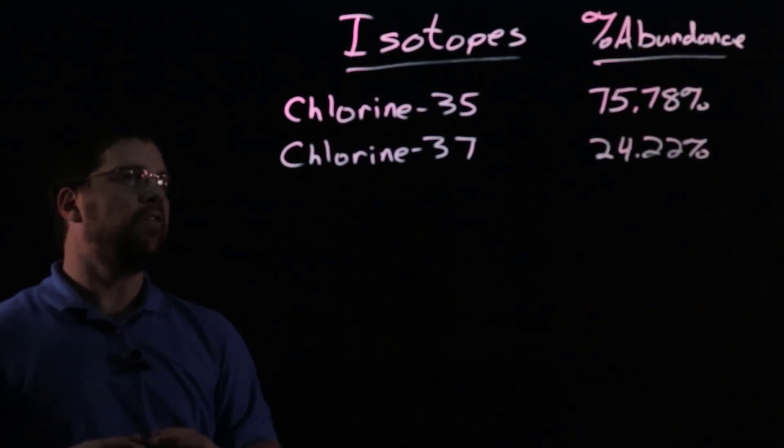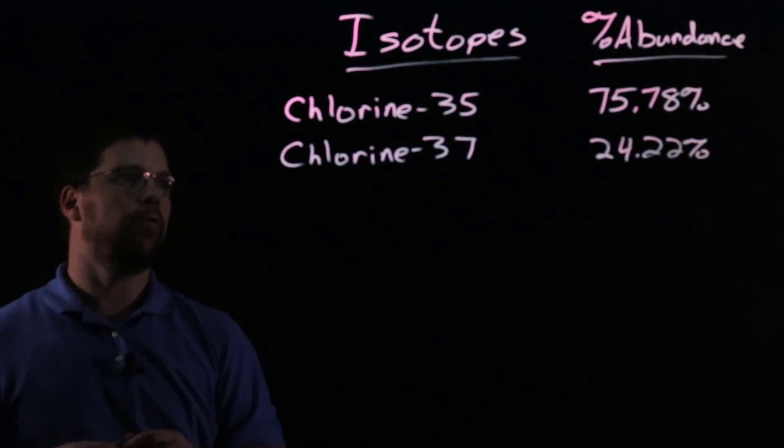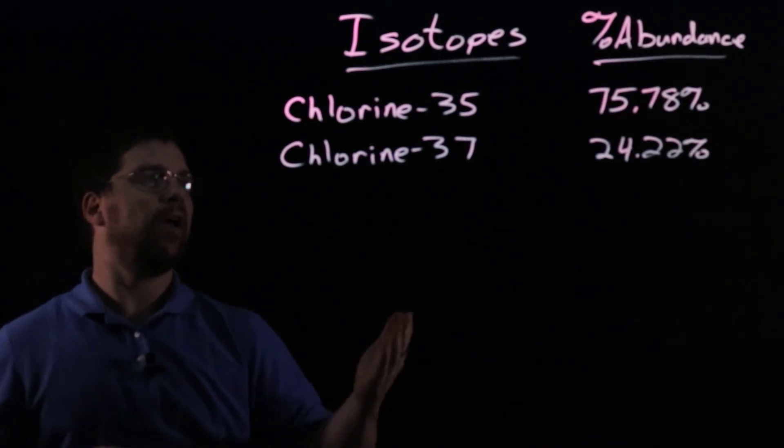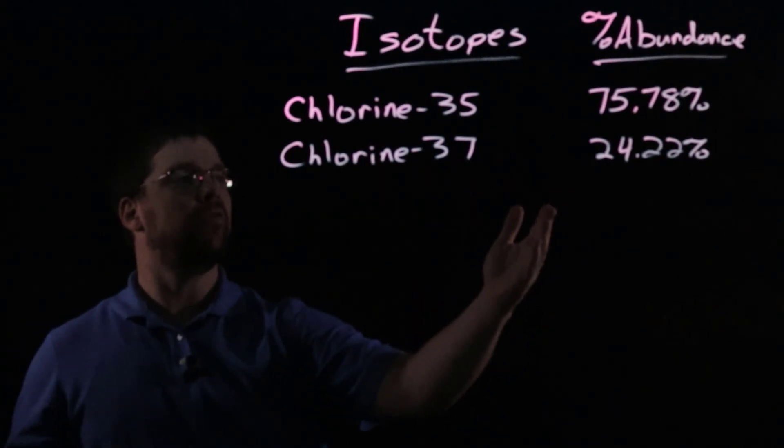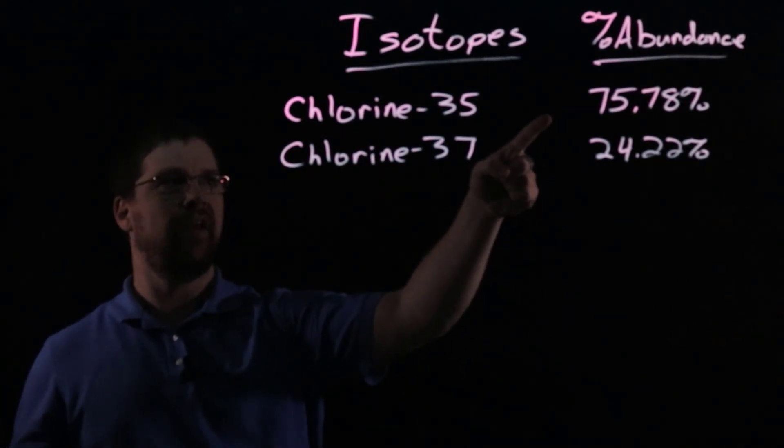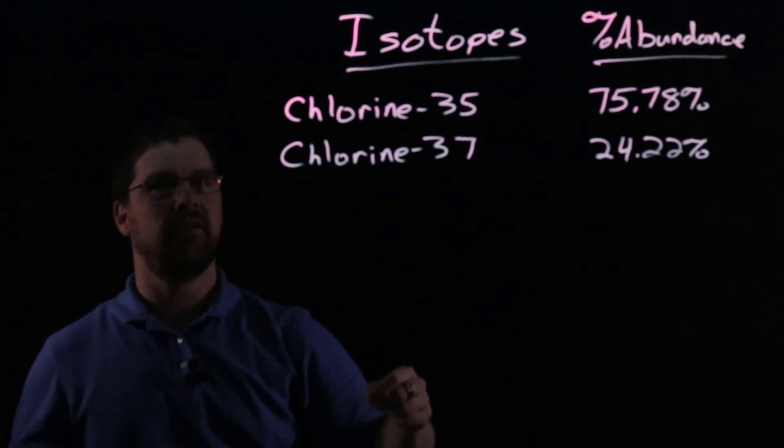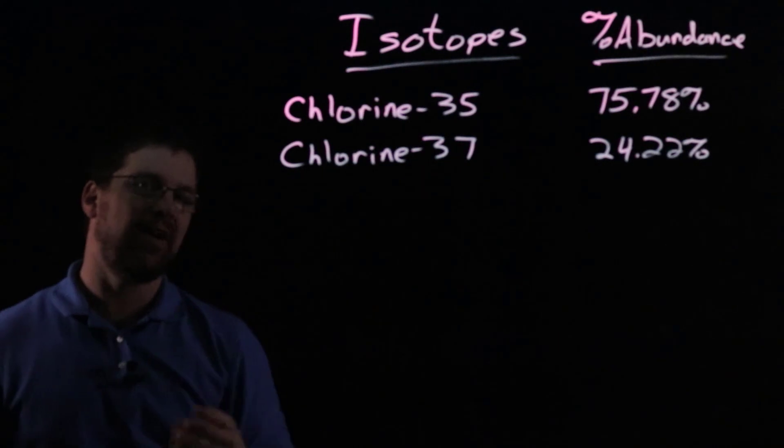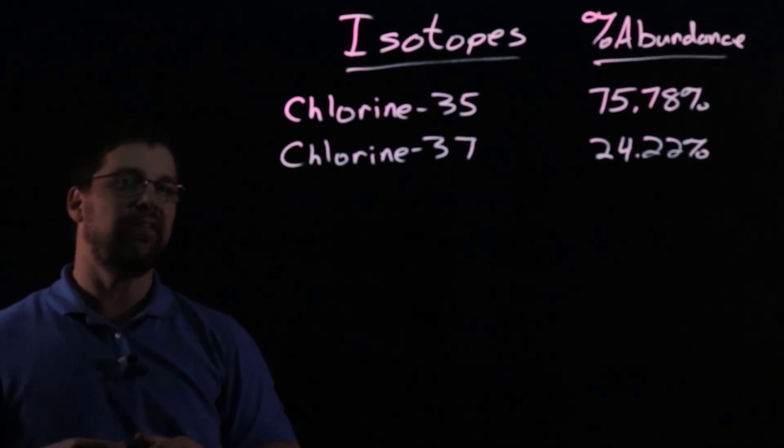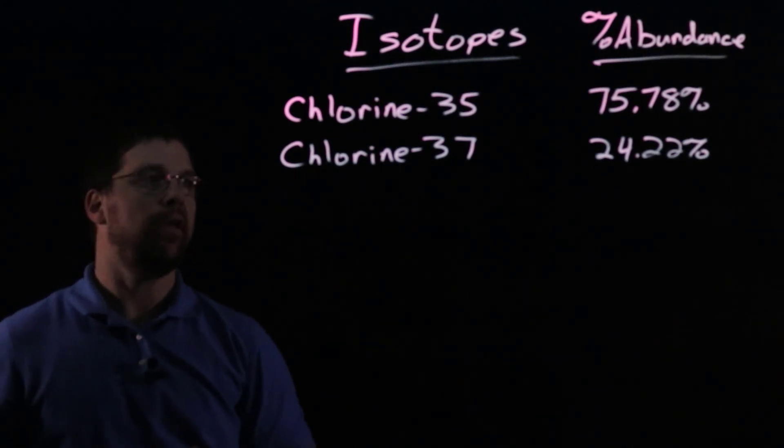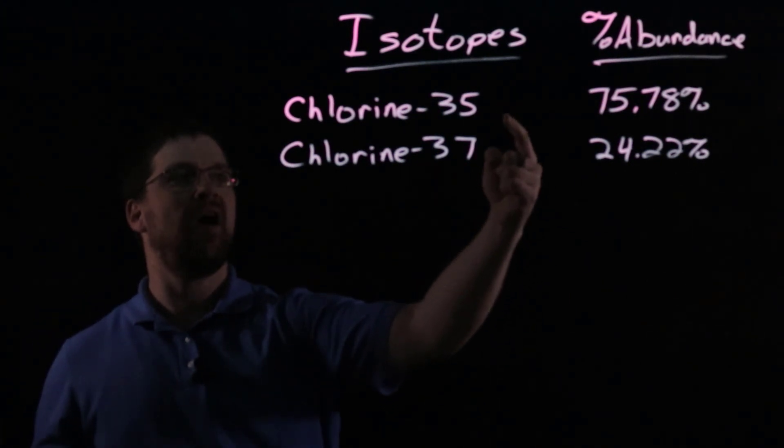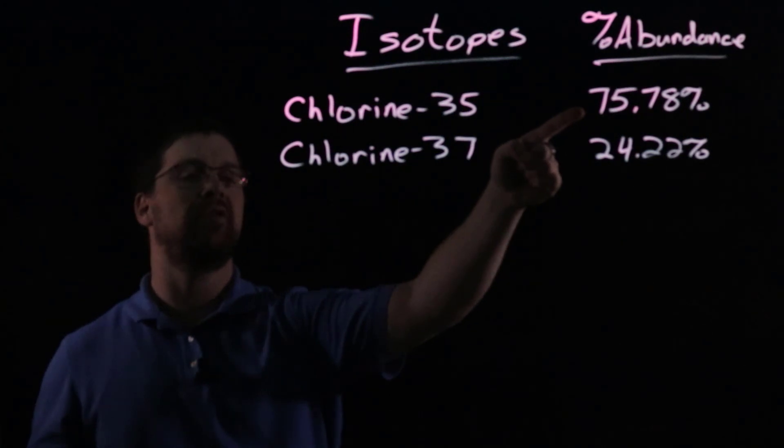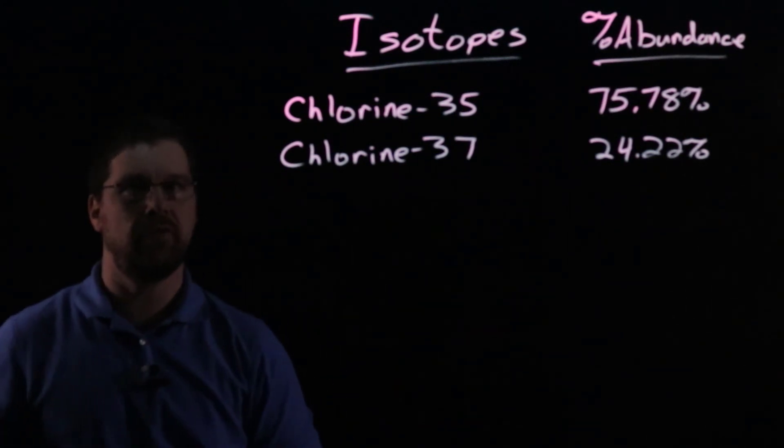And so here we see the abundances for chlorine-35 and chlorine-37. One of the first things that we can do is just by looking at the relative abundances, we can see that three out of every four chlorines has a mass of 35. And only one out of four chlorines has a mass of 37. So what that tells us right off the bat is that the average atomic mass for chlorine is going to be closer to 35 than it is to 37. Why?